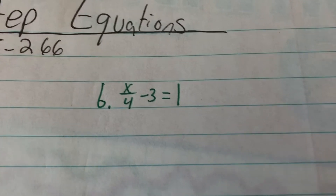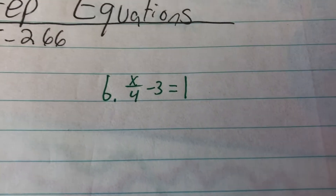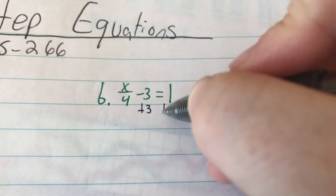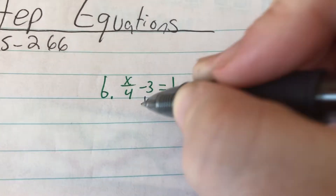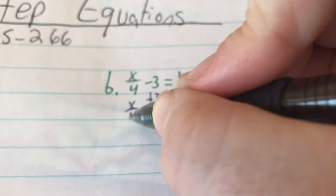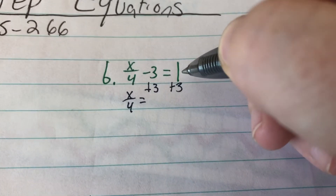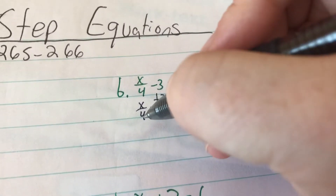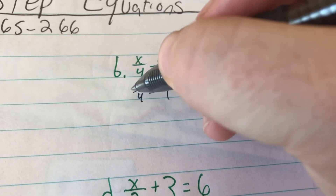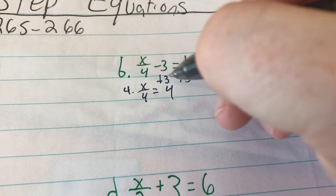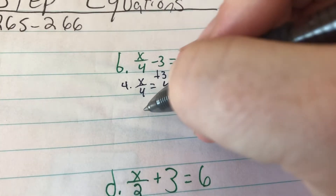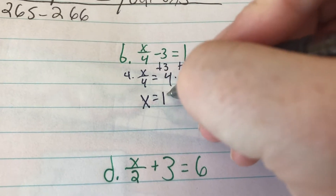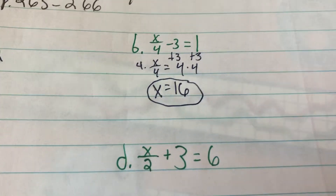On B we have x over 4 minus 3 equals 1. Since we have minus 3, we add 3 to each side. So x over 4 equals 1 plus 3, which is 4. To get rid of this 4 in the denominator, we multiply both sides by 4. x equals 4 times 4. 4 times 4 is 16, so x equals 16.